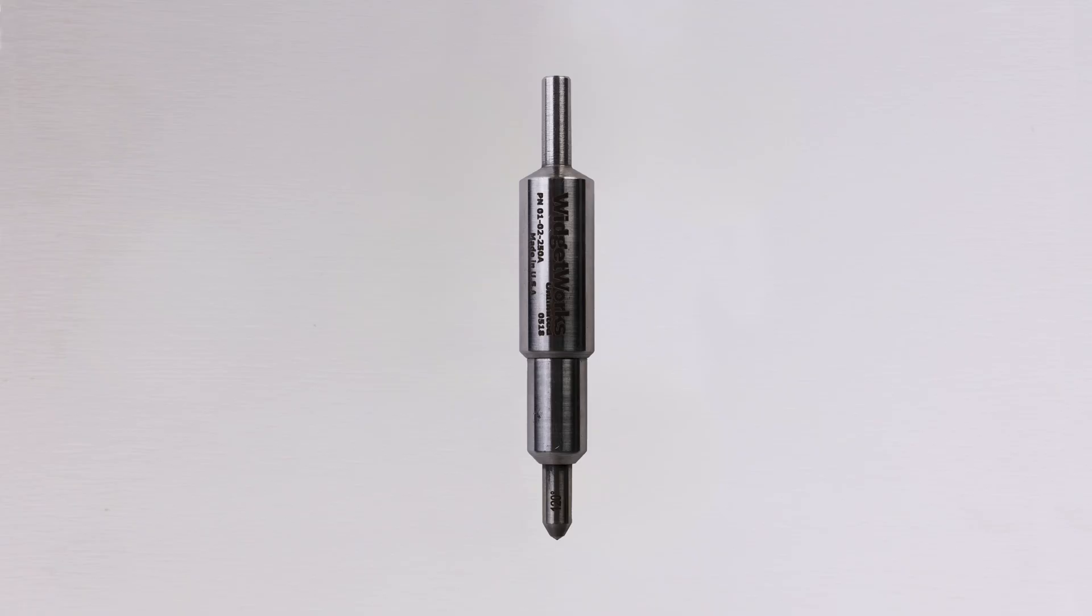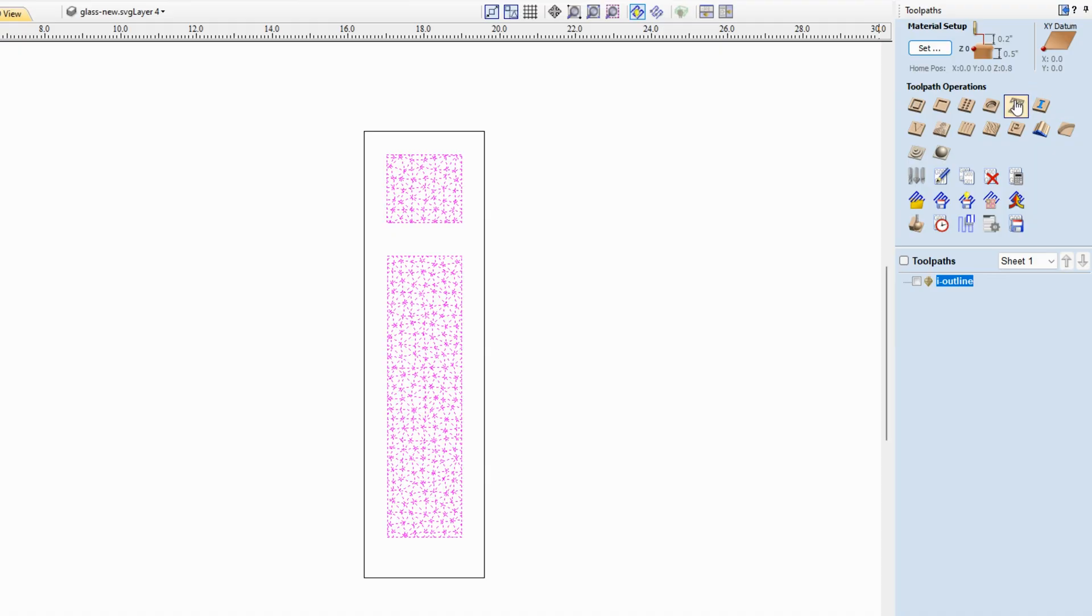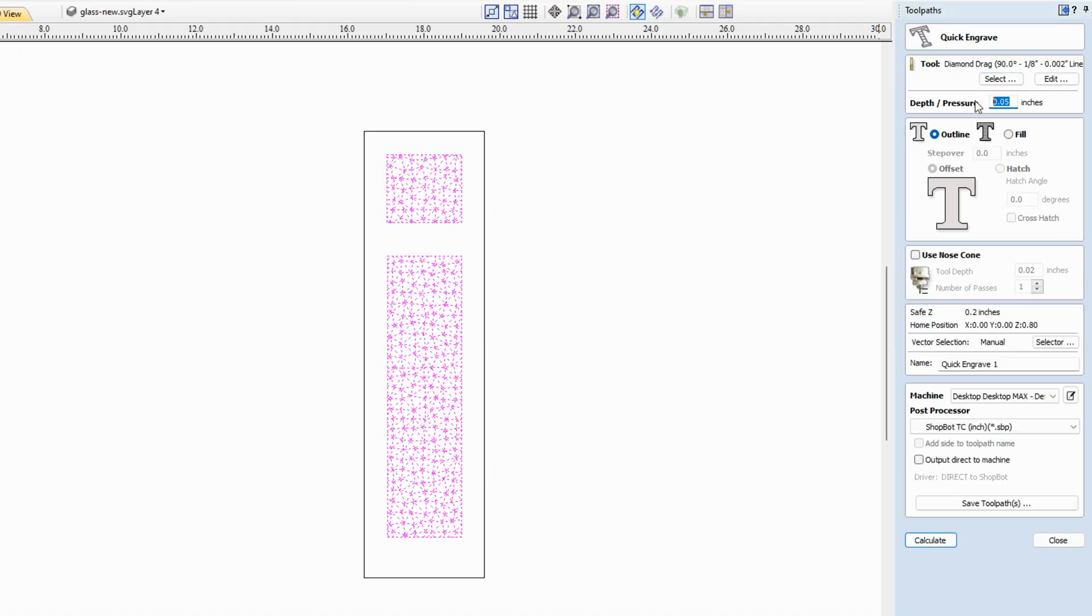We're using a diamond drag bit to etch the glass. If you zoom in closely, you can actually see the diamond. Next, let's turn off the spindle and create a quick engraving toolpath using vCarve Pro.